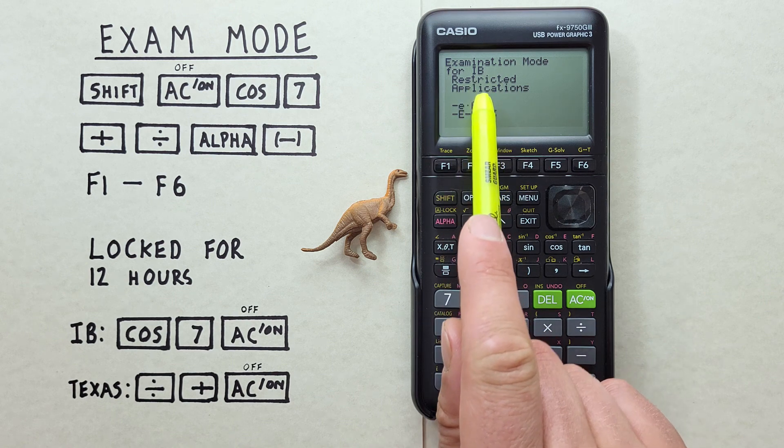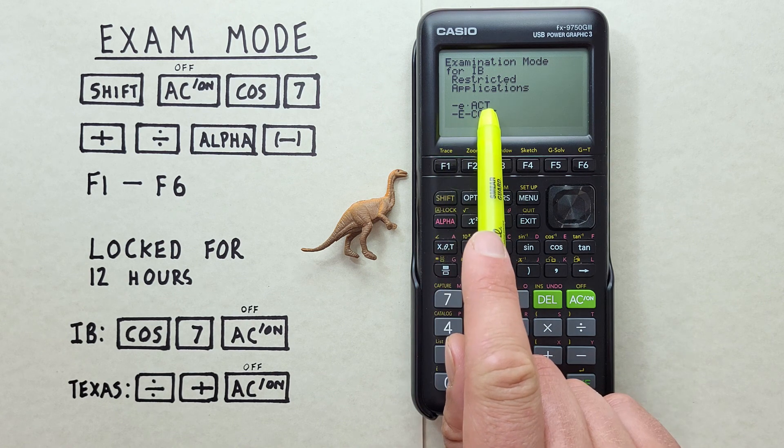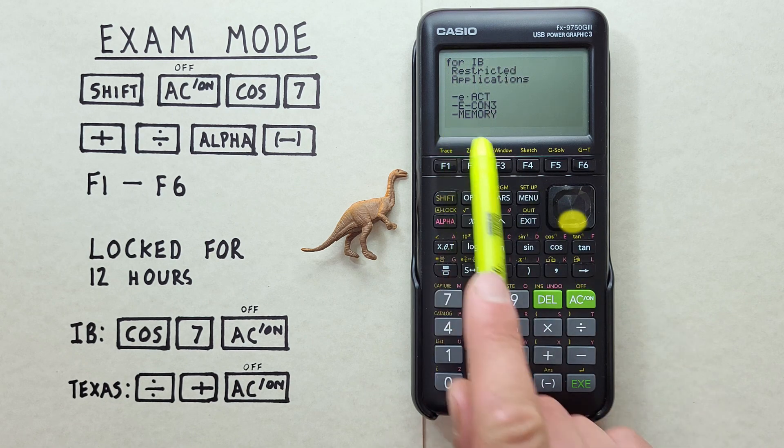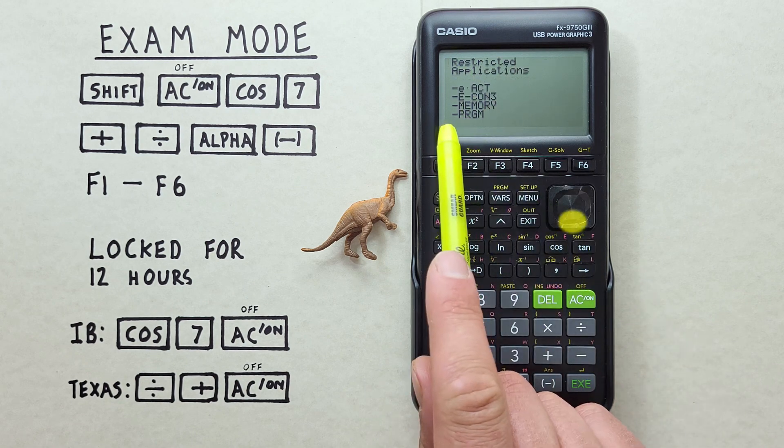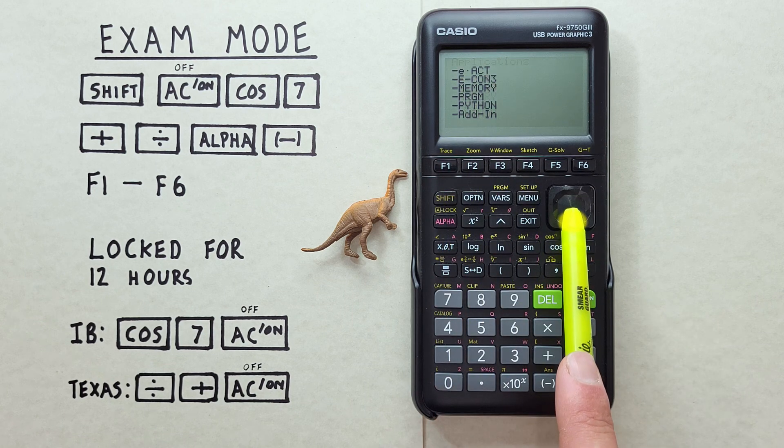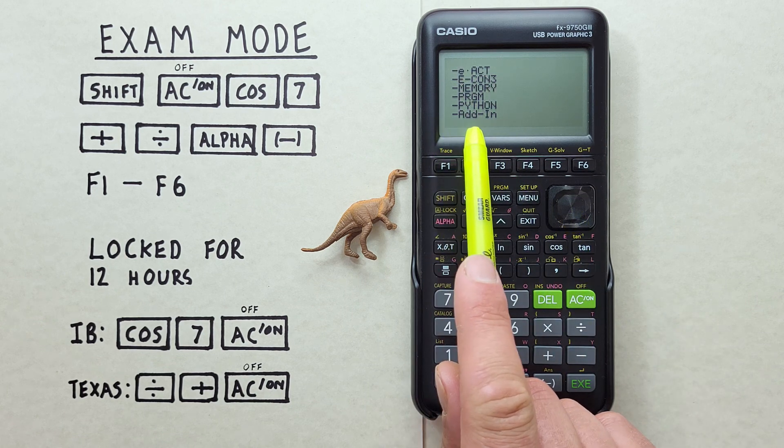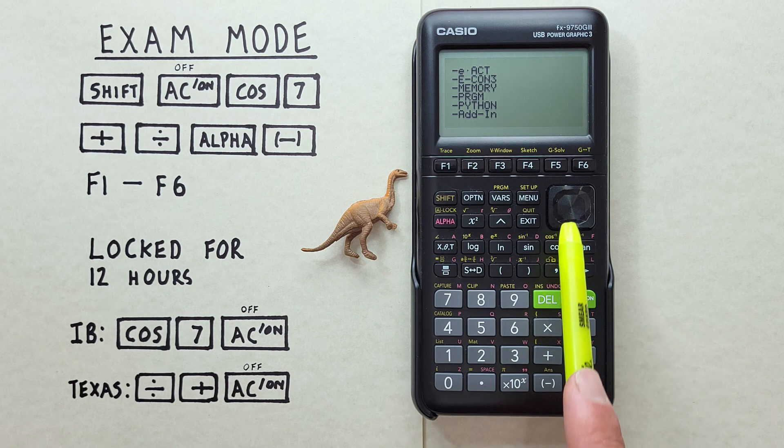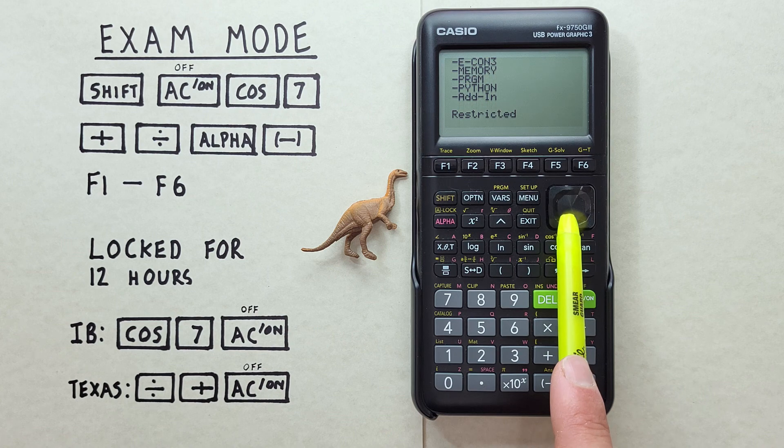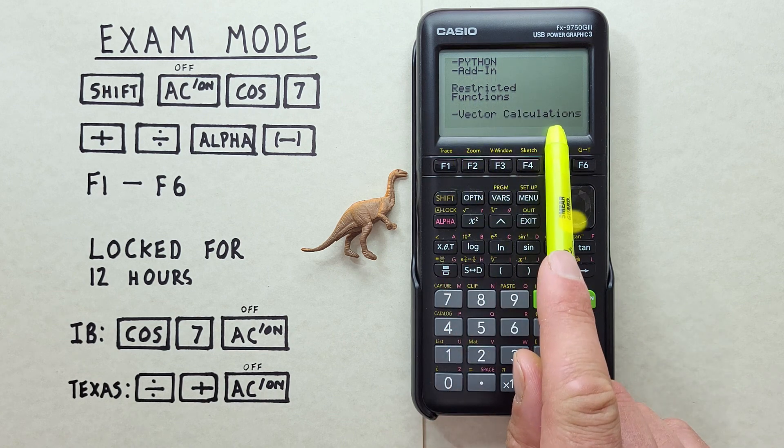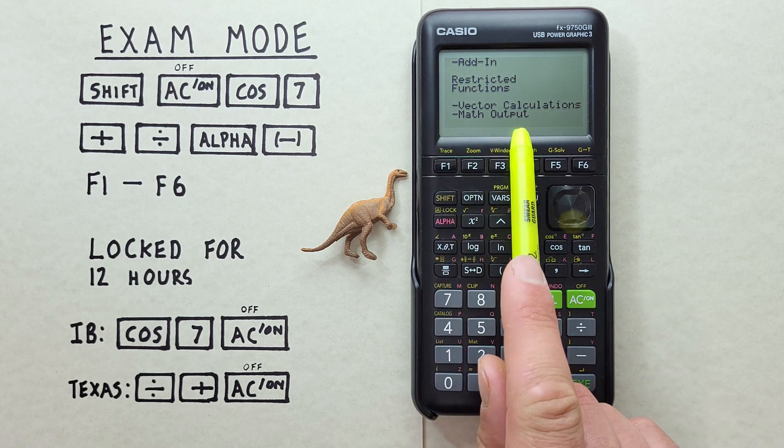So we see for IB, it restricts the EACT, ECON3, the Memory, the Program, Python, and Add-In Apps when using this calculator in Exam Mode. It also restricts the Functions, Vector Calculations, and Math Output.